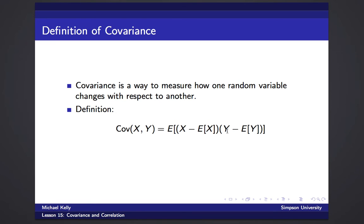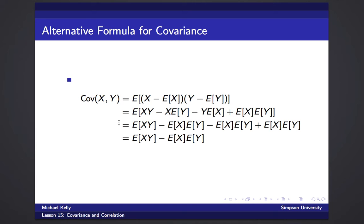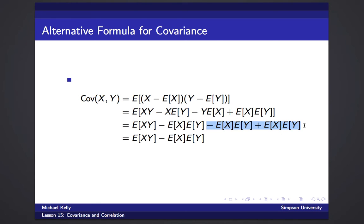If we work out the algebra and FOIL the definition of covariance, we get the expected value of XY minus X times E[Y] minus Y times E[X] plus E[X]E[Y]. Using the linearity of expectation, we can break up the expected value over differences and sums, giving us E[XY] minus E[X]E[Y] minus E[X]E[Y] plus E[X]E[Y]. The last two terms cancel, leaving us with E[XY] minus E[X]E[Y].